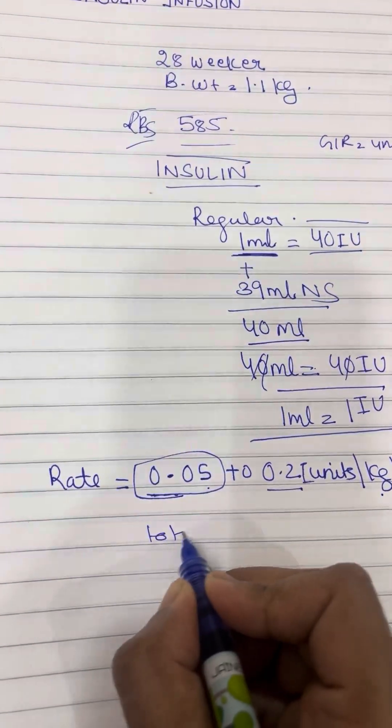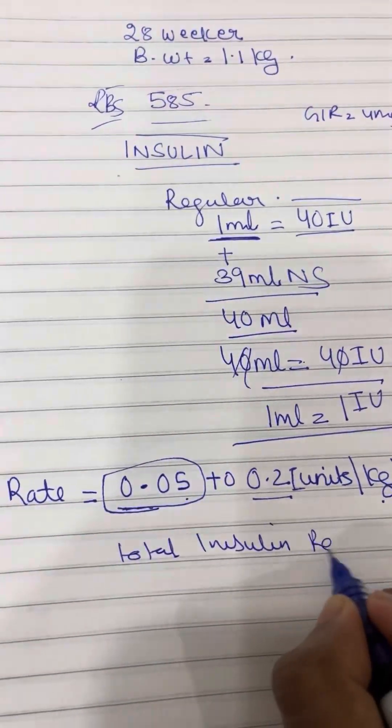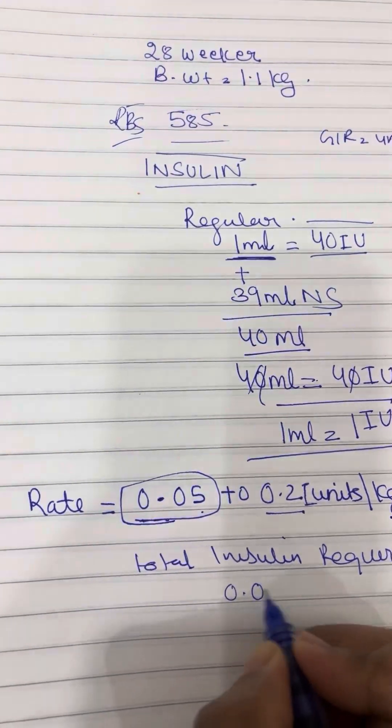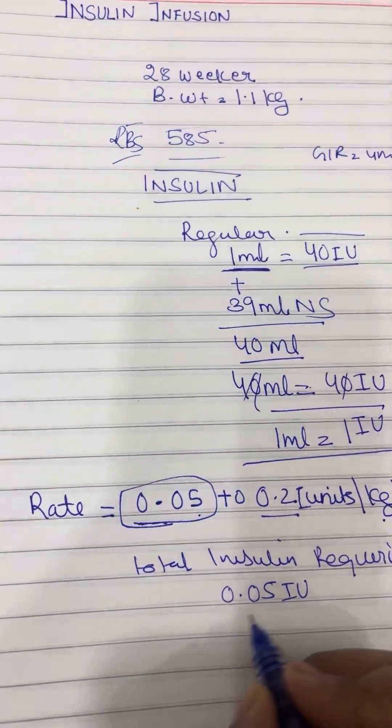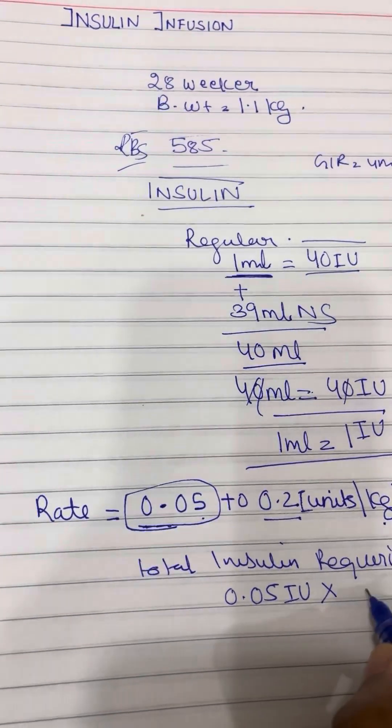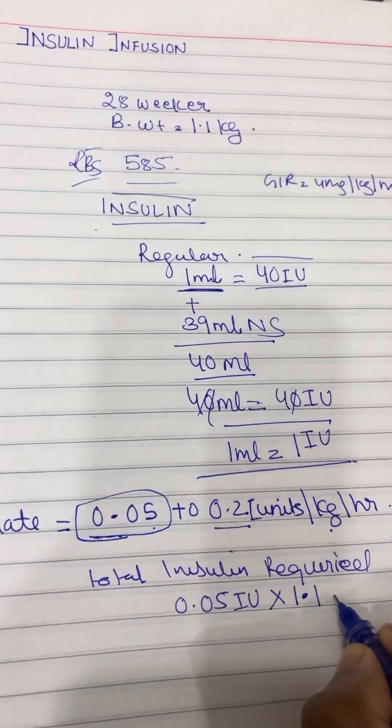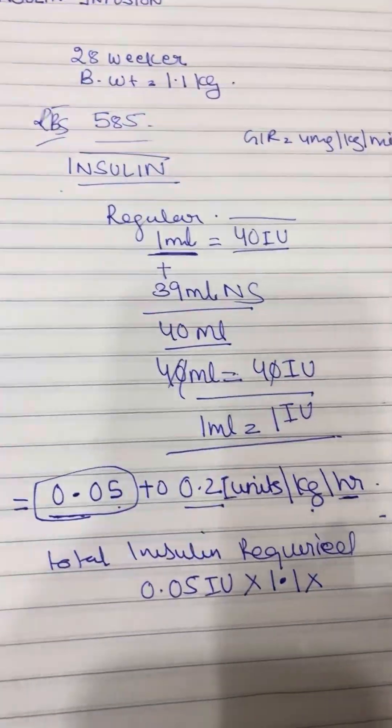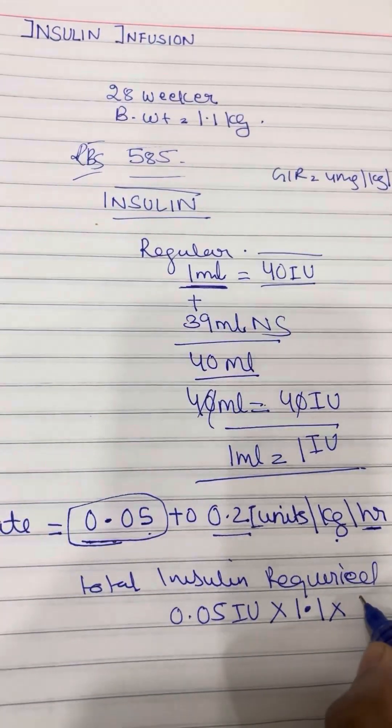How will I do that? I want 0.05 international units of insulin divided by the body weight of the baby, that is 1.1 kg. This is per hour. I am talking about the total insulin required in a day, so it will be times 24 hours.